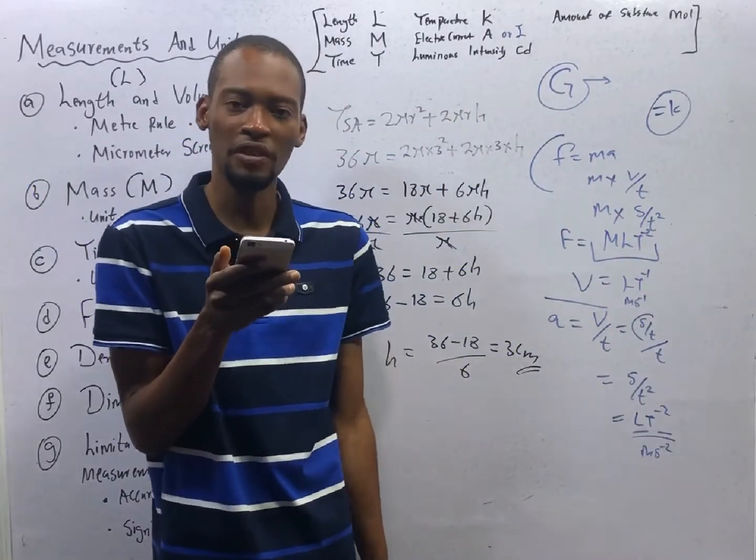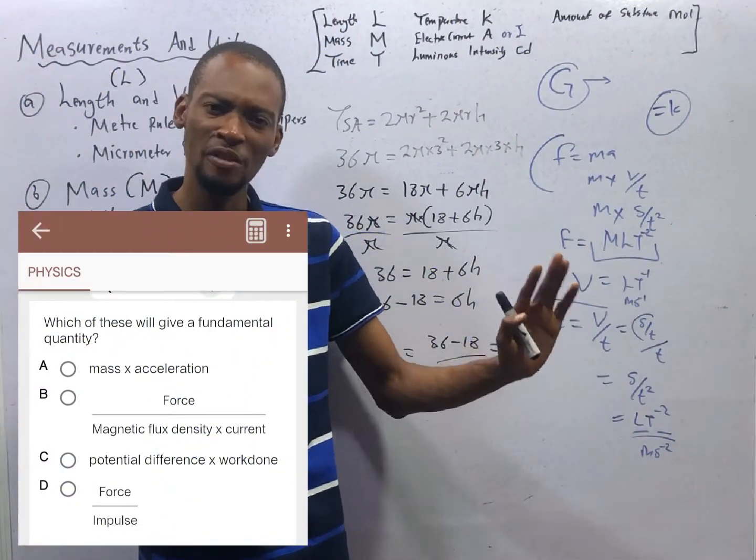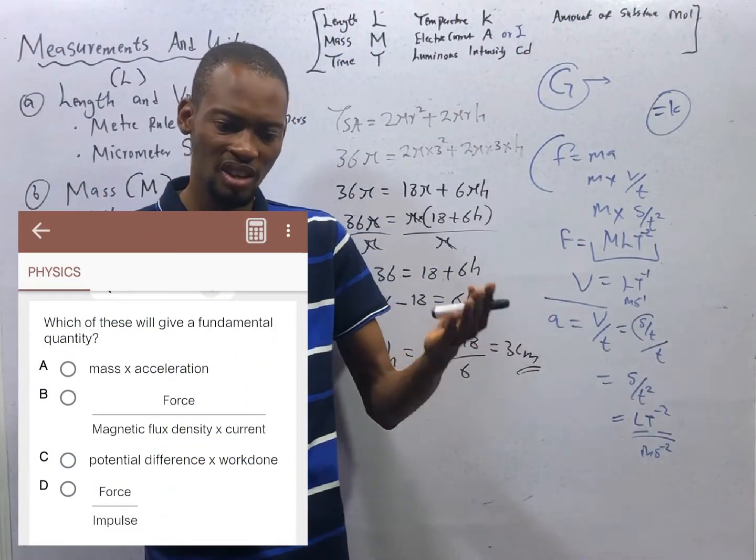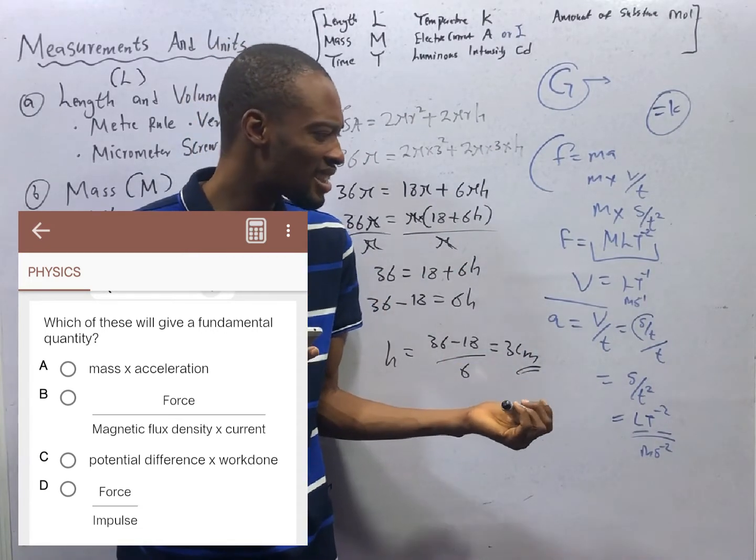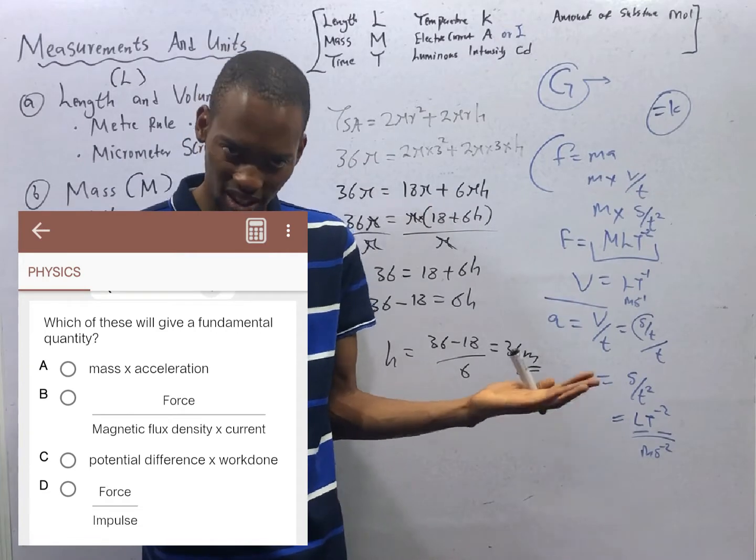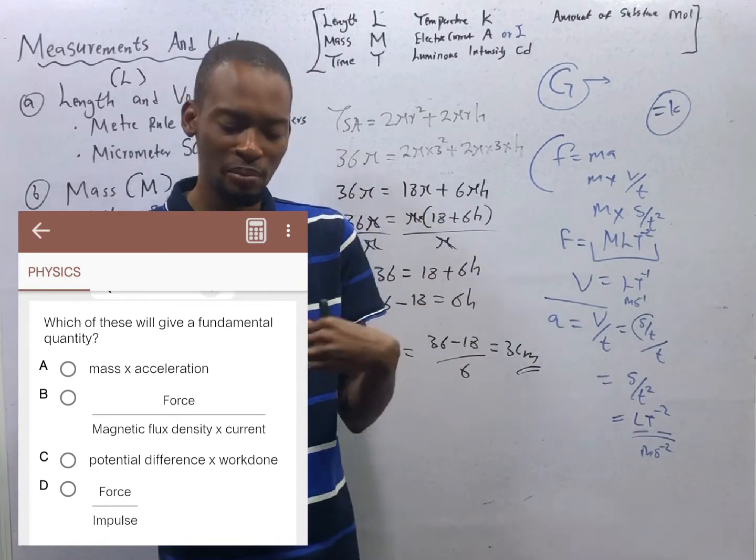Which of these will give a fundamental quantity? In this type of question, you start from the known to unknown. Option A, mass times acceleration. Mass times acceleration. That is force. Yes. So force is derived quantity.